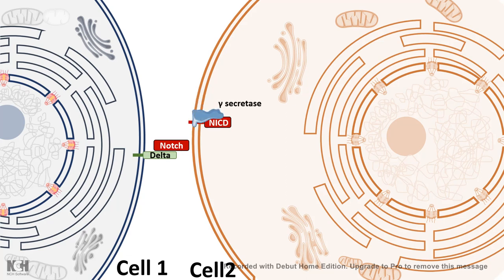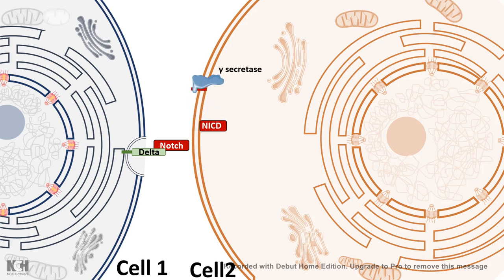Another complex known as gamma-secretase then chops off the Notch intracellular domain from the transmembrane domain, and as a result NICD is freed. The Notch extracellular domain and Delta, which have interacted with each other in the other cell, are about to be endocytosed. Meanwhile, the NICD can migrate into the nucleus.